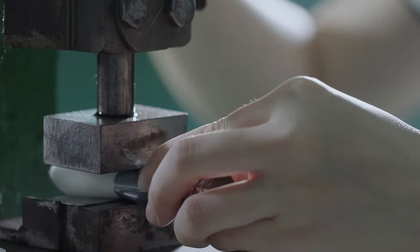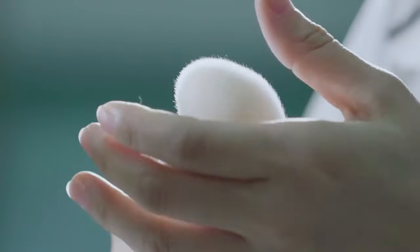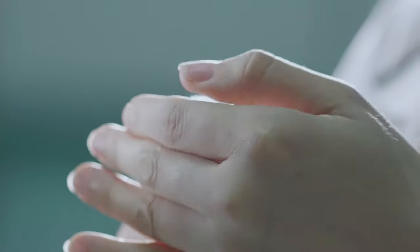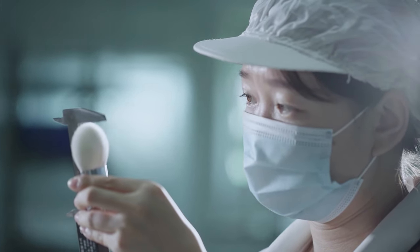For some brushes, such as our eyeliner brush or slanted foundation brush, we need to squash the end of the tube to get it shaped. Of course after the pressure, we reshape it again.